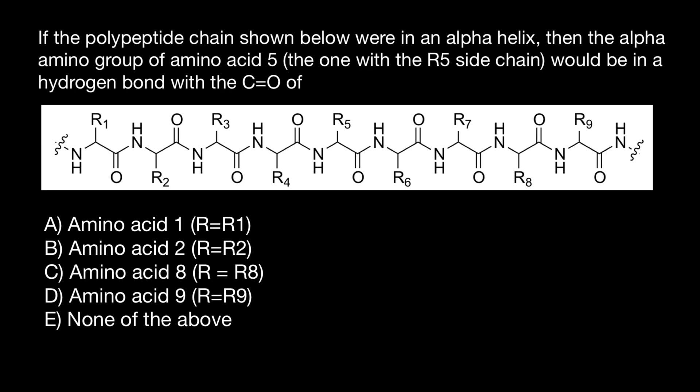Here's the problem. If the polypeptide chain shown below were in an alpha helix, then the alpha amino group of amino acid number five — the one with the R5 side chain — would be in a hydrogen bond with the carboxylic group of which amino acid? You have to choose one of the answers. Even if you saw my previous videos, it's probably not going to help you solve this problem because it is easy to get into the trap.